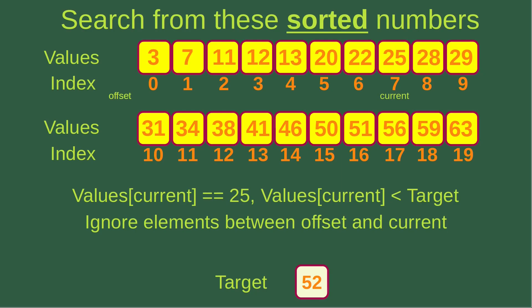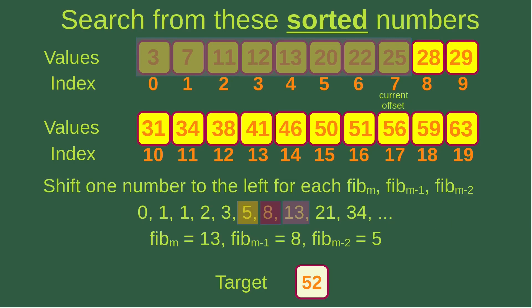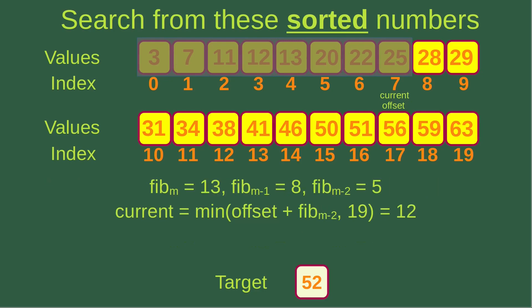I ignore the elements between offset and current by assigning the current index to the offset variable, graying out those numbers. I shift one number to the left for each Fibonacci number: Fibonacci M is 13, Fibonacci M-1 is 8, Fibonacci M-2 is 5. Offset is 7 and Fibonacci M-2 is 5, so I get 12. Comparing 12 to 19 gives 12 as the smaller value, so the current index becomes 12.